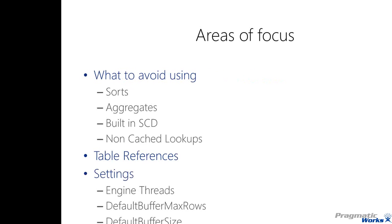Now I want to talk about some base components inside SSIS that are on my 'do not use' or 'avoid' list. The first ones are Sort and Aggregate. I put those two in the same bucket because inside SSIS they are known as fully blocking tasks. What that means is the sort or aggregate operation has to be completed across the entire data set — all rows coming through the SSIS package — before it can move on to any other object.